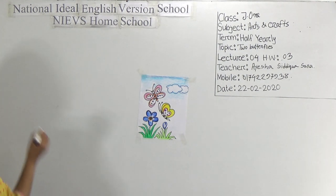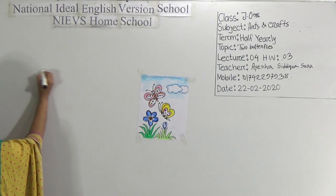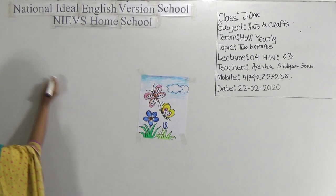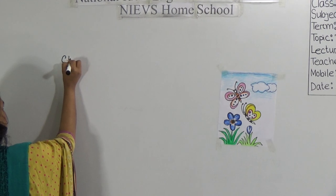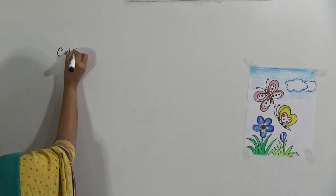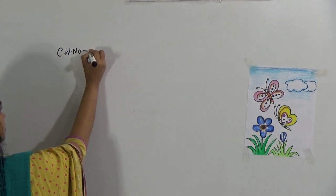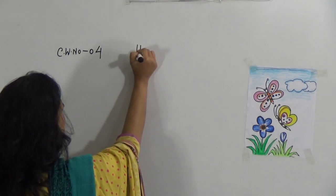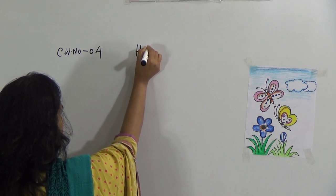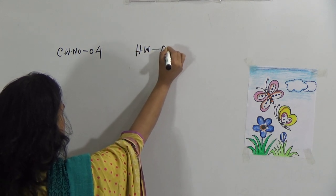So dear student, look at the board. When you draw your topic first, write down the CW number 04. And this one is your HW also. HW number 03.